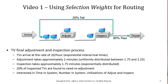In the first video of this module we'll be considering selection weights for routing entities. The example we're going to use is a TV adjustment inspection facility where TVs arrive at the rate of 20 per hour. They go through an adjustment that takes approximately two minutes, with processing times being uniformly distributed.